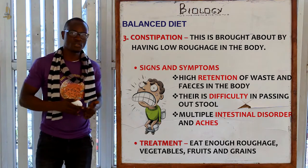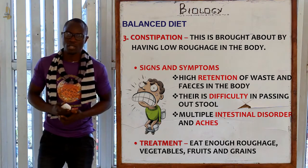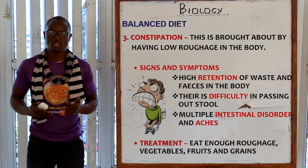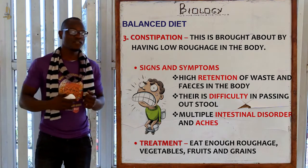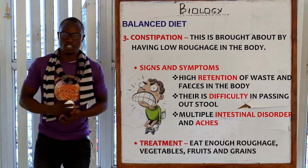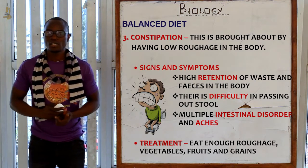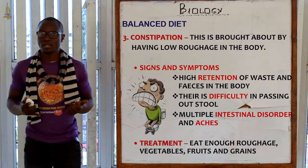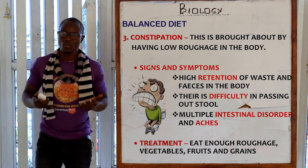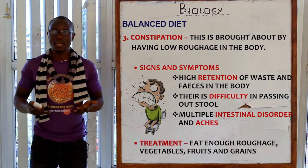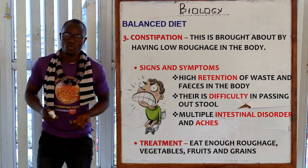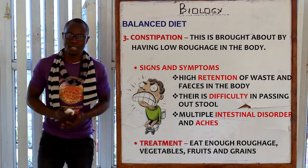Constipation can be treated by eating food rich in roughage. Examples of such foods include vegetables, fruits, and grains.